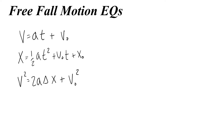For free-fall motion problems, I replace x with y, and anywhere there's an acceleration I replace it with g. But I need to be careful — the acceleration due to gravity is always downward, so I need to make it negative g. Anywhere I have an acceleration, I replace it with negative g because gravity is pulling the object down.